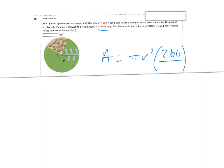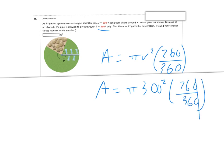Last problem: a sprinkler pipe sweeps 260 degrees, and we need the area it irrigates. Using the area formula, area equals pi r squared times 260 over 360. The radius is 300, and we round to the nearest whole number. On the calculator: pi times 300 squared times 26 divided by 36 gives approximately 204,204 square feet. That's all the grass being covered — not the rocks.